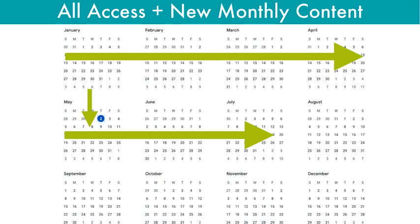The third option is the all access and new monthly content model. This is when you join a membership and get all previously published content. If somebody joins in May, they would still get access to all the content from January, February, March, and April, and then as they stay on as a member they'll continue to get June, July, etc. This model gives people access to all the previous content you've put together.